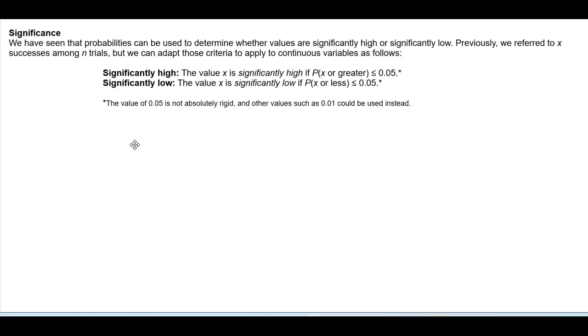For significantly high, the value X is significantly high if the probability of the value of X or greater is less than or equal to 0.05.